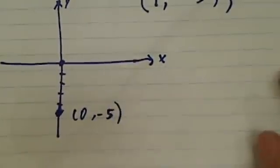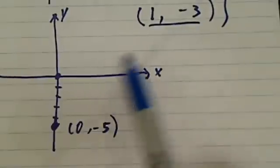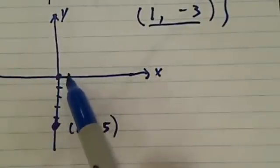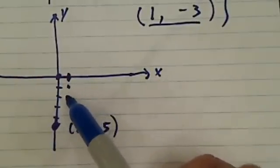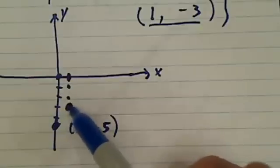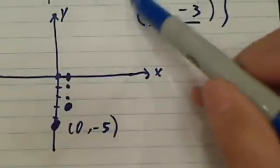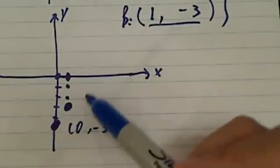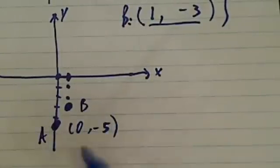Another point we're looking for is 1 and minus 3. So I'm going to go here 1, and I'm going to go down minus 1, minus 2, minus 3. So here's my point. Here's my point B. This is my point B. Here's my point A.